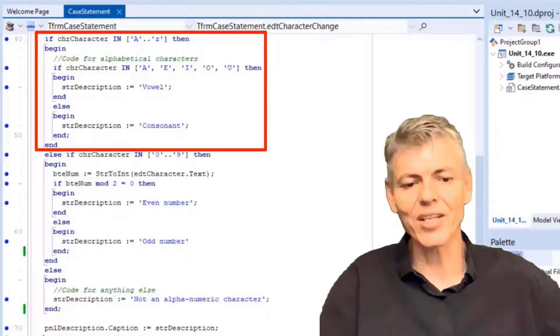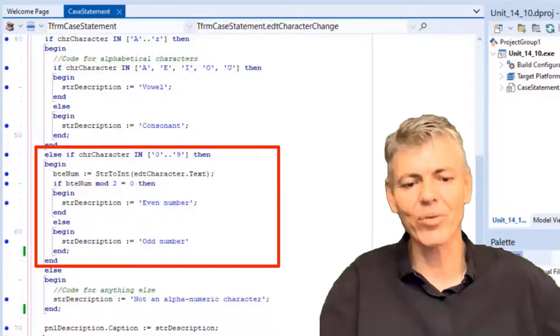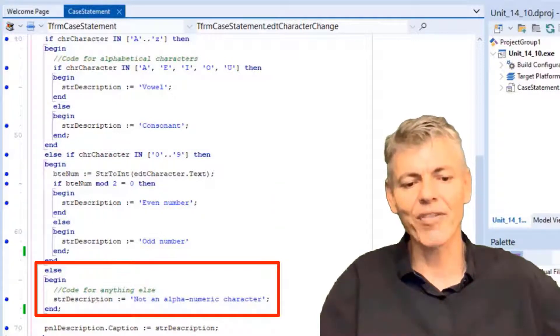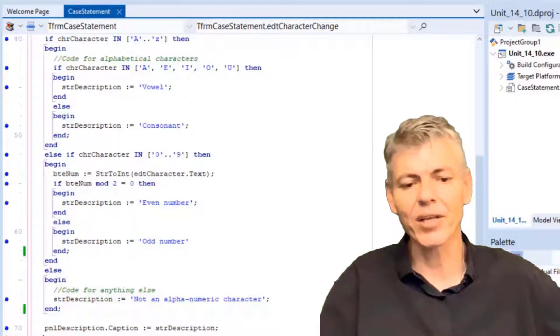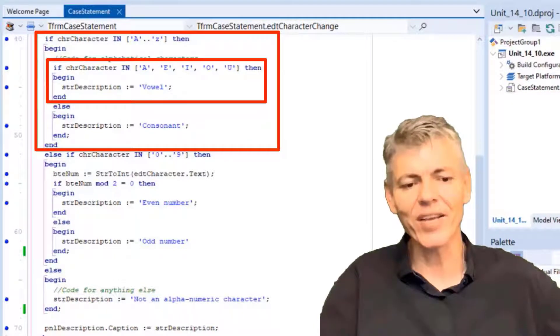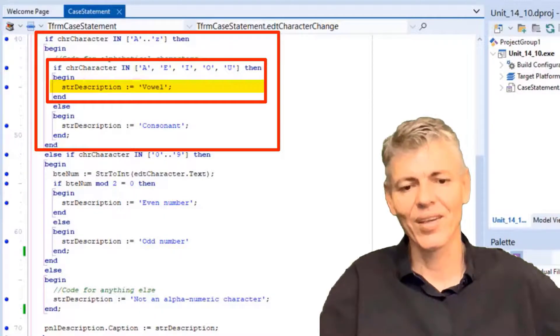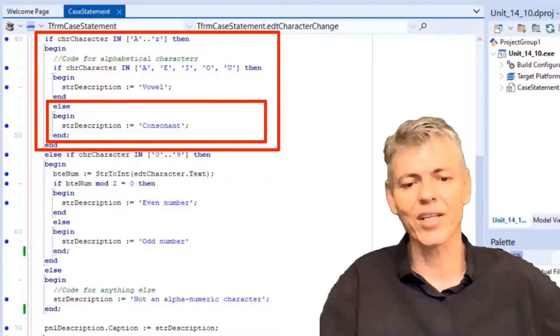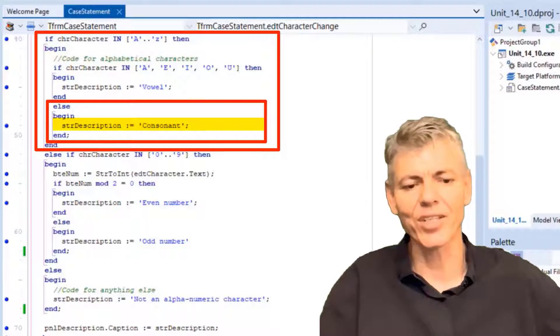Here we have an if statement that uses sets to check if the character is in the alphabet. If not, the compiler will skip this code and then branch out to the else if statement to check if it is a number. If not, the compiler goes to this else statement, which will then assign the phrase not an alphanumeric character to strDescription. If the character is in the alphabet, the first if branch will execute. Inside the if block, we nested another if statement with its own else block. So if the outer if statement evaluates to true, the inner if statement will check if the character is a vowel or not. The inner if statement also uses a set for the check. If it is a vowel, the word vowel is assigned to strDescription. If it is not a vowel, this inner else branch will execute and the word consonant will be assigned to the string variable named strDescription.